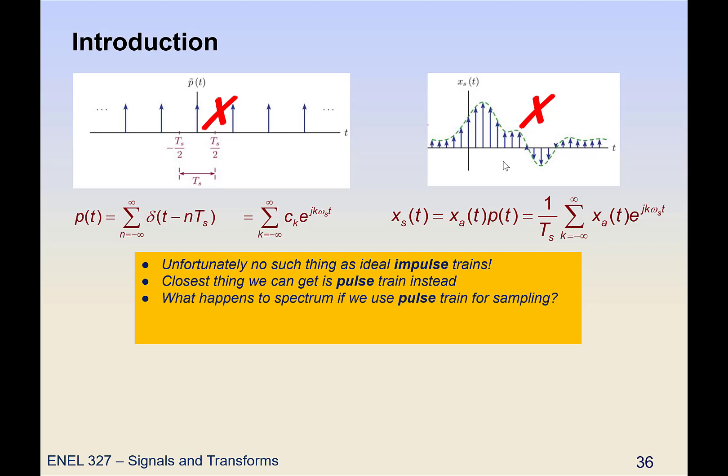Now, what we need to know is what's the implication of that on any practical considerations. So what happens to the spectrum if we use a pulse train rather than an impulse train? Because that's going to influence what should our sampling rate be and how do we reconstruct.